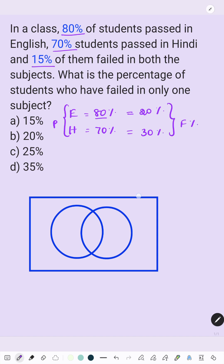15% are failed in both subjects. Both subjects fail percentage equals 15%. So, we need to find who have failed in only one subject. That is this, this, and this.